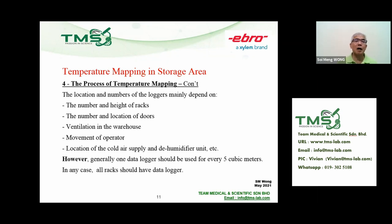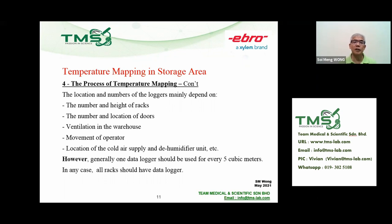A common question is: how many loggers should I use and where should I place them? The location and number of loggers mainly depend on the number of racks and their height or width, the number and location of doors, ventilation in the warehouse, movement of operators or forklifts, and the location of cold air supply and dehumidifiers. As a general rule, one data logger should be used for every five cubic meters, and in any case all racks should have a data logger.